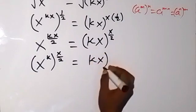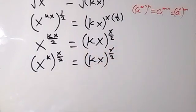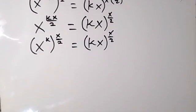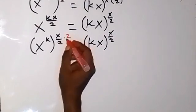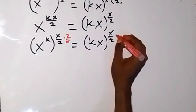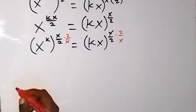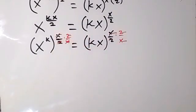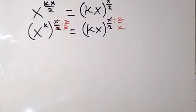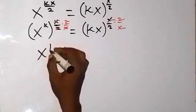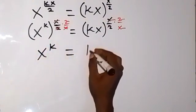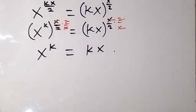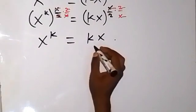This now equals kx raised to power x over 2. From there, let's try to cancel the power by multiplying both powers with the reciprocal of x over 2, which is 2 over x. When I multiply both powers by 2 over x, they cancel each other, and we are left with x raised to power k equals kx.